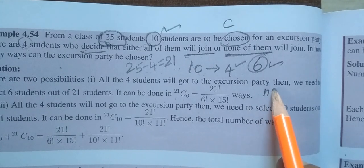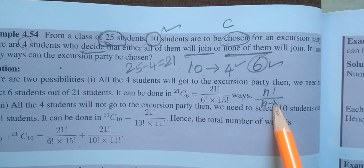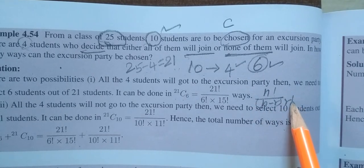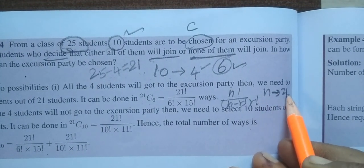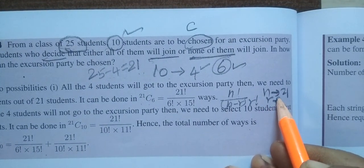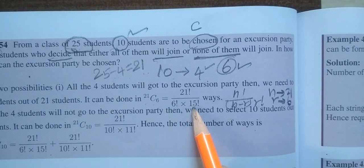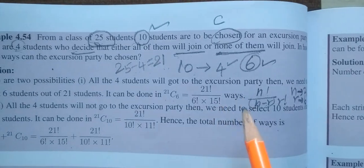Factorial N by N minus R, then R factorial. N minus R, then R factorial. N is 21 here. N is 21. Then R is 6. So, apply the formula. 21 factorial by 6 factorial. Then 21 minus 6 is 15. Calculation no need.